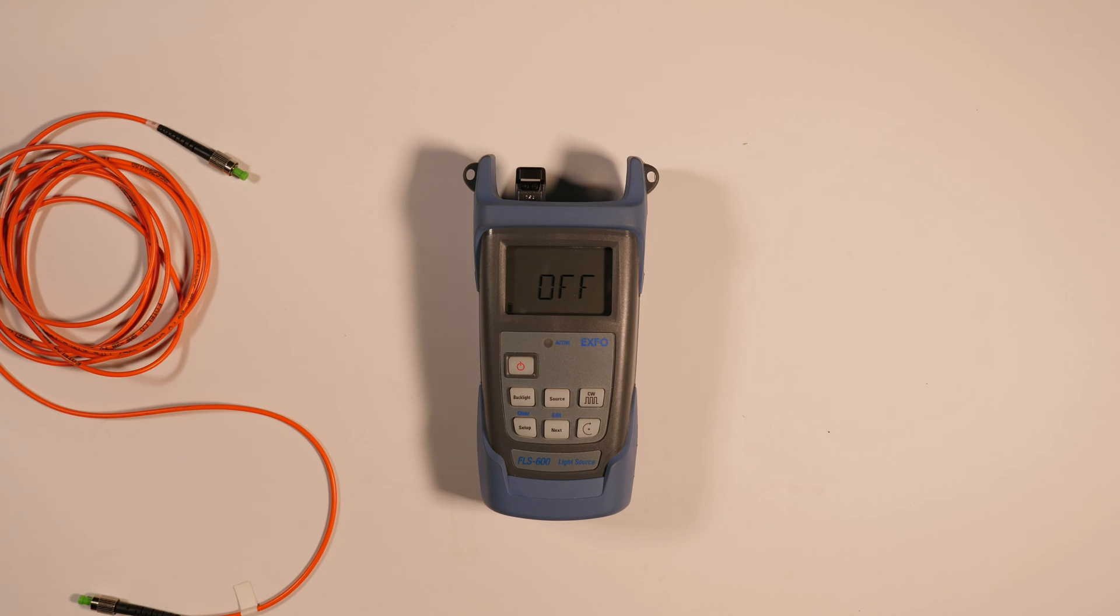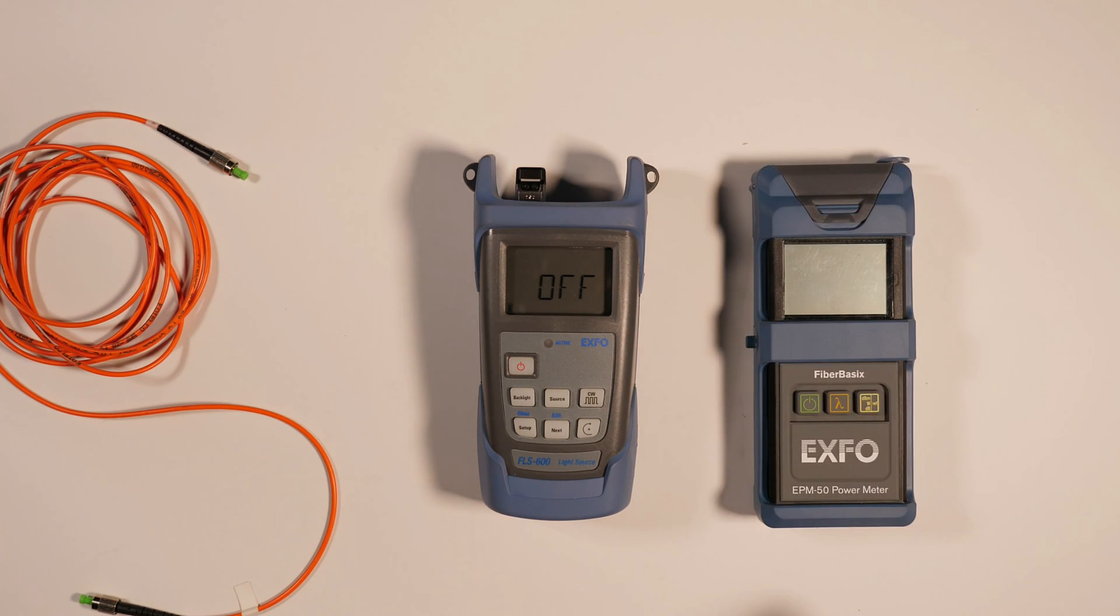The EXFO FLS 600 is a light source used in conjunction with a power meter for measuring loss in fiber optic networks.